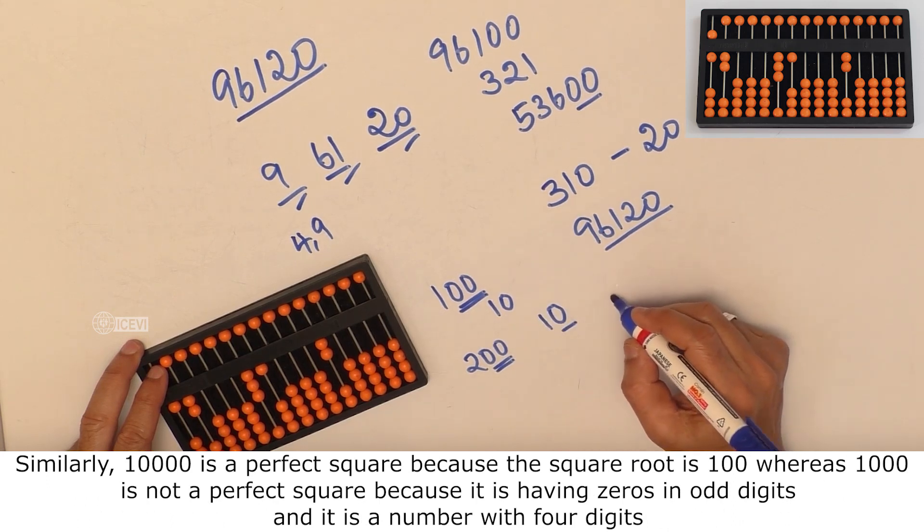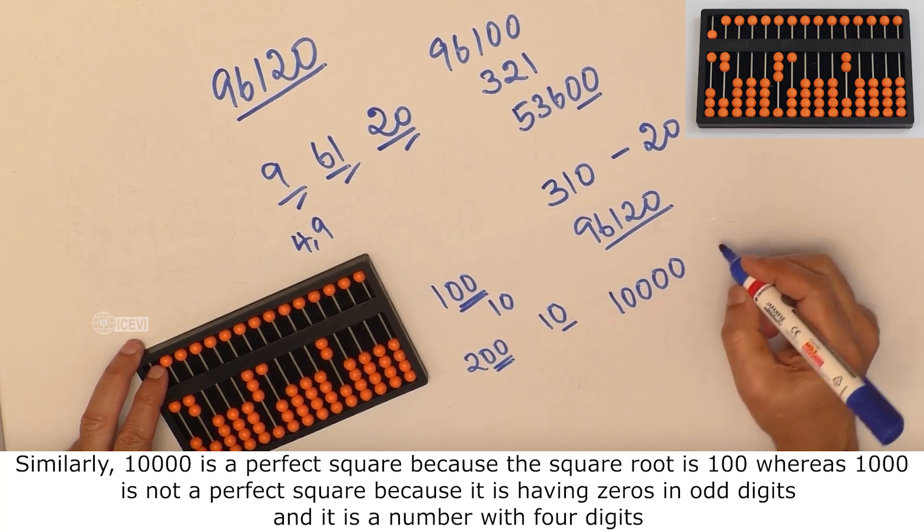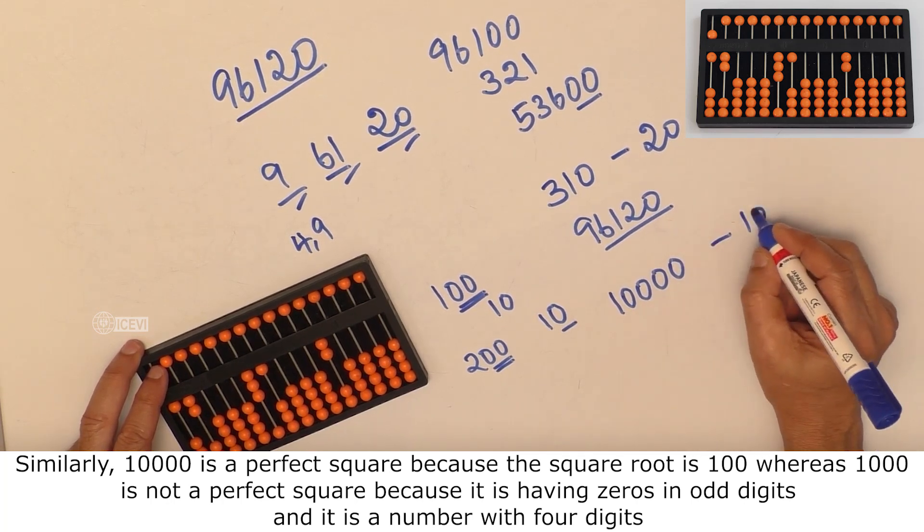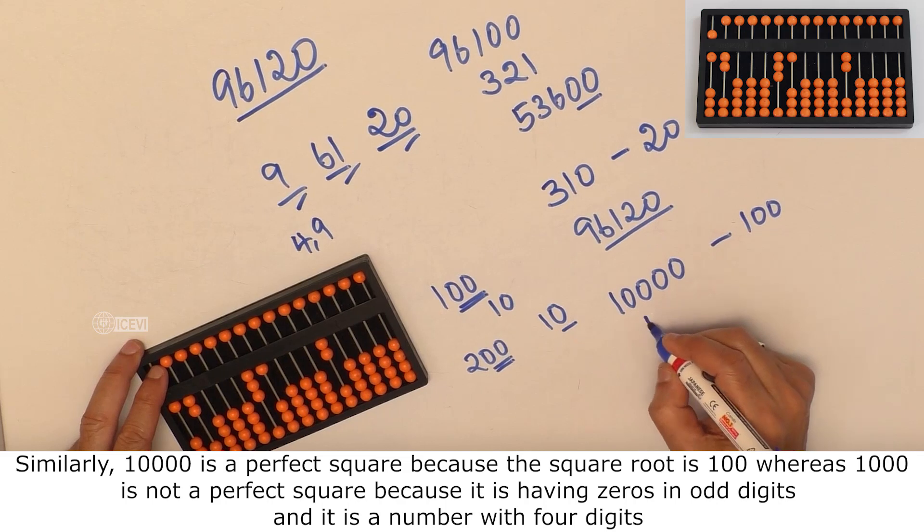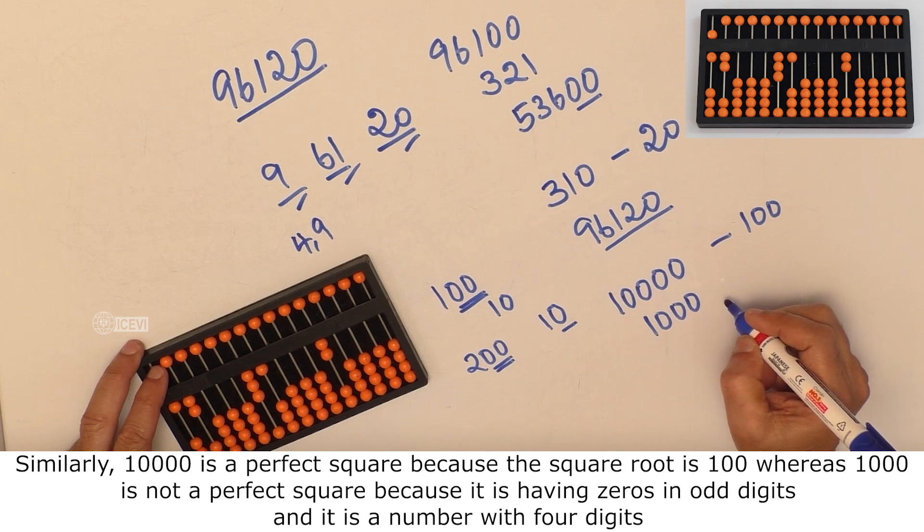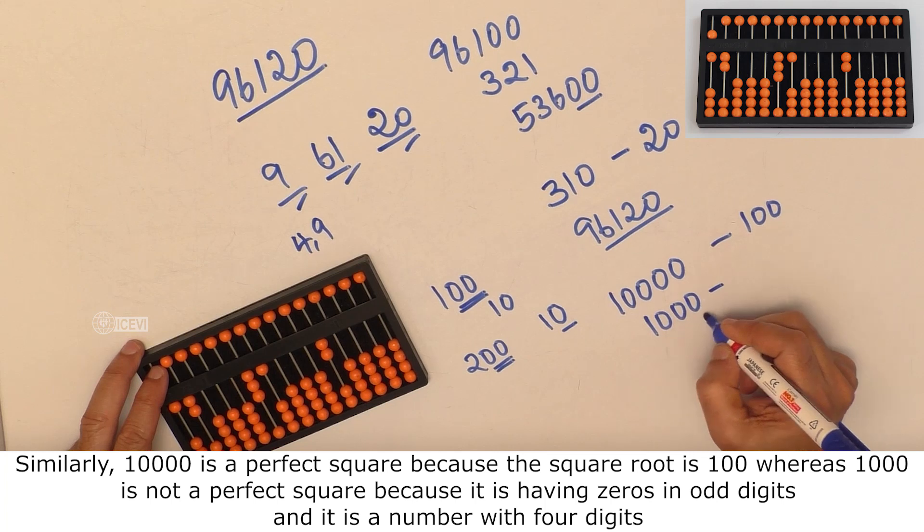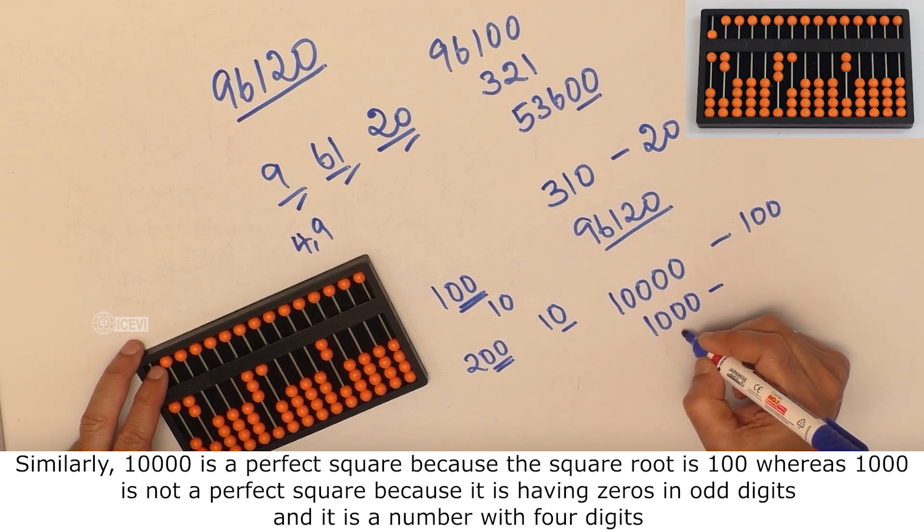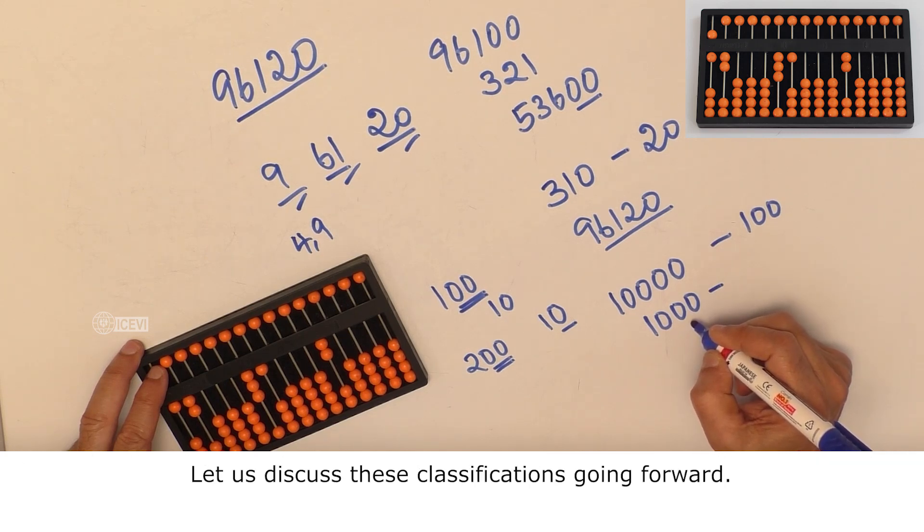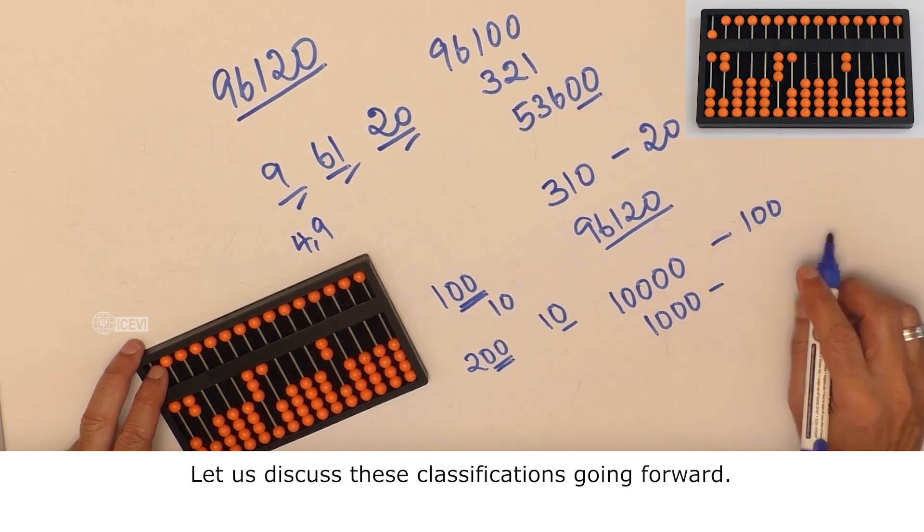Similarly, 10000 is a perfect square because the square root is 100, whereas 1000 is not a perfect square because it is having zeros in odd digits and at the same time, this is a number with four digits. Let us discuss these classifications going forward.